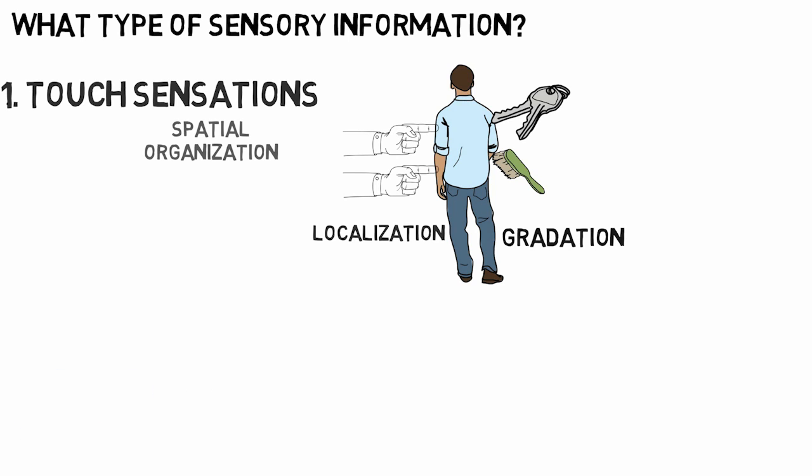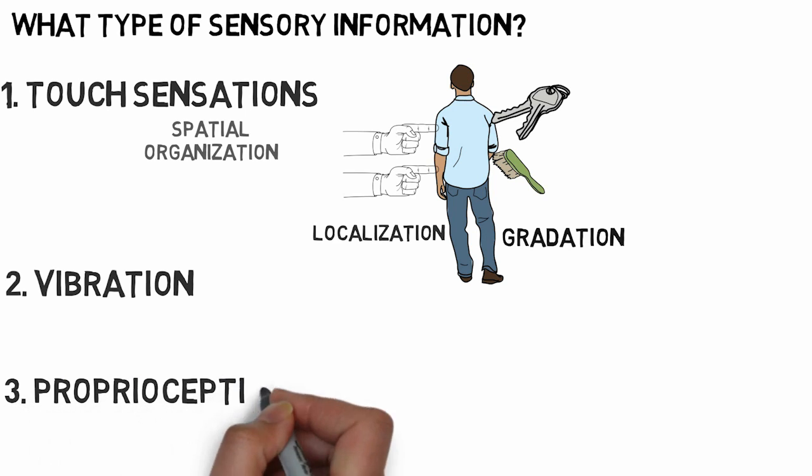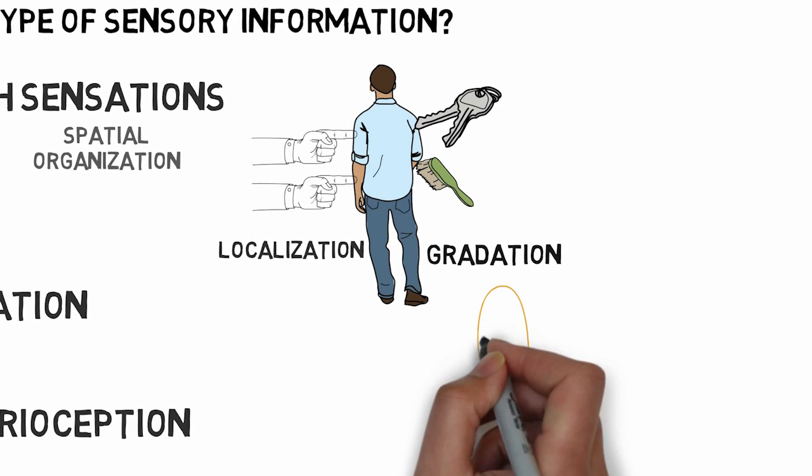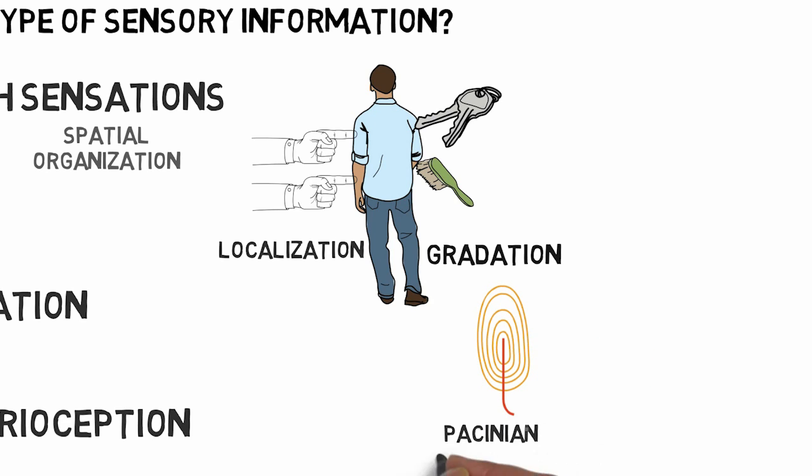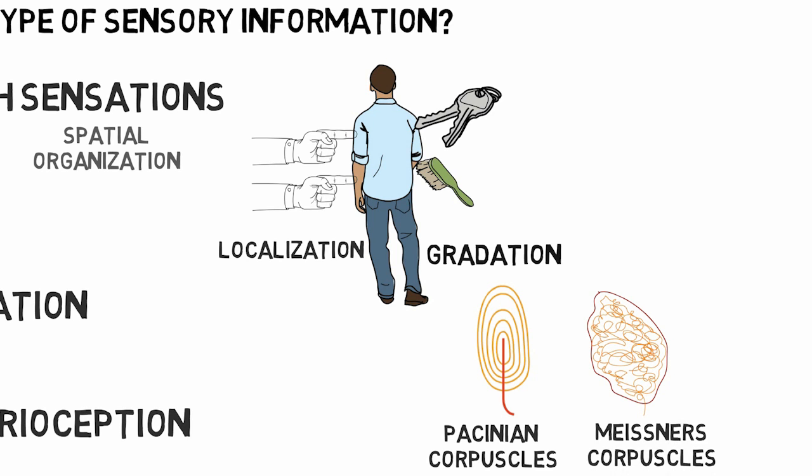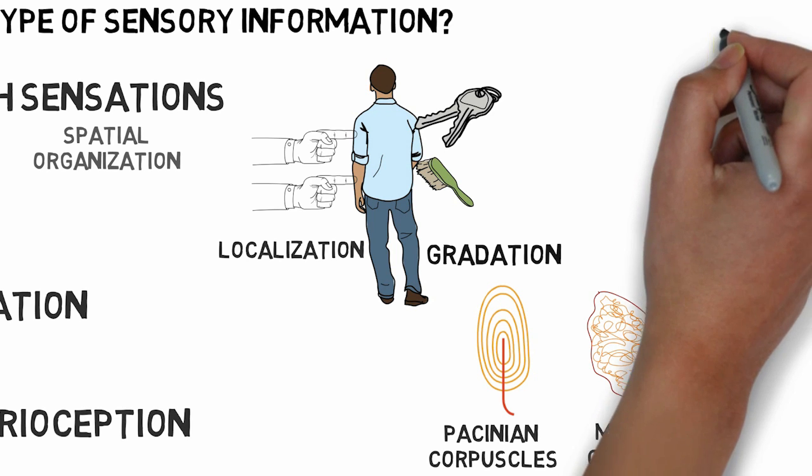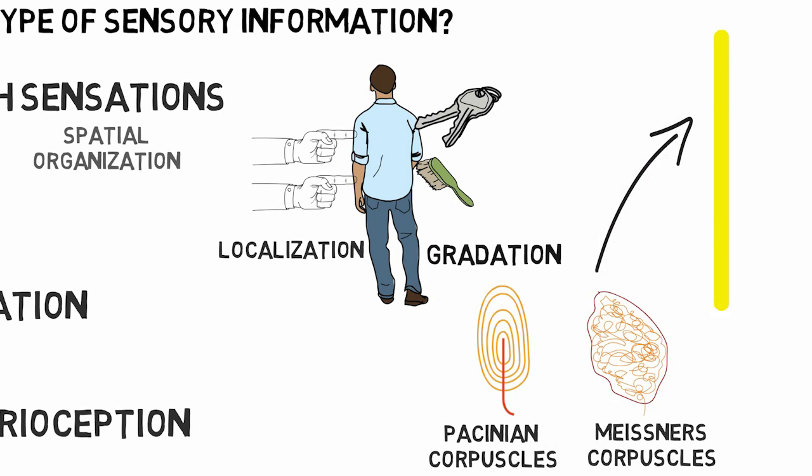Other types of sensory information the dorsal column transmits are the sensations of vibration and proprioception. All these sensations are first perceived by specialized receptors present in the skin known as the Pacinian corpuscles and also the Meissner's corpuscles. These receptors then transmit the information through the nerve fibers to the spinal cord.